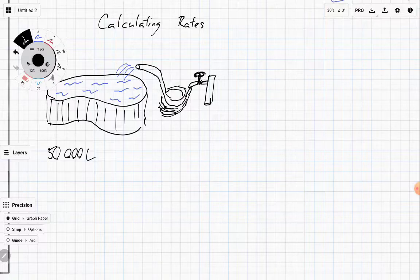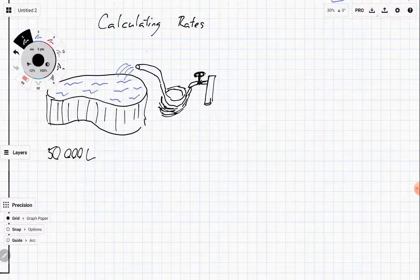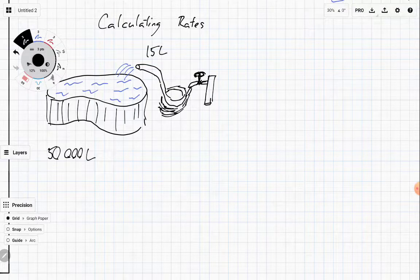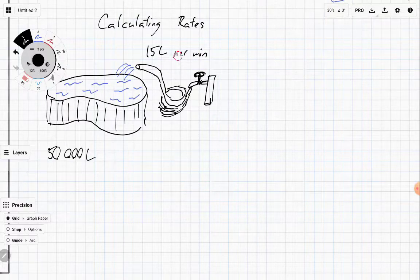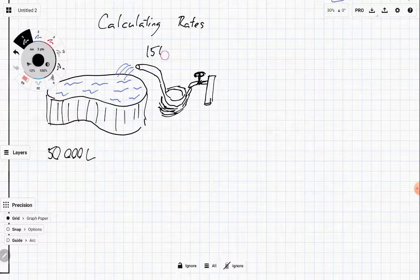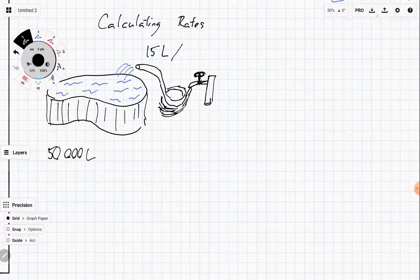You've got a hose and the hose fills things up at let's say it can do about 15 litres per minute. Okay now we don't usually write rates like that. Instead of the word per we just write slash. So 15 litres slash minute. But we read the slash as per.